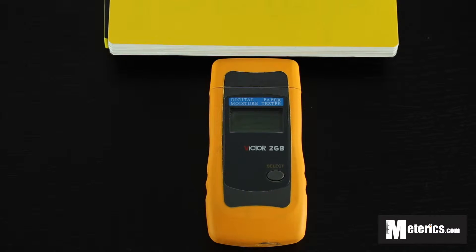Hi everyone. What I have here is a digital paper moisture meter from Victor. The model number is 2GB.